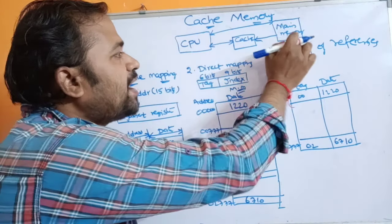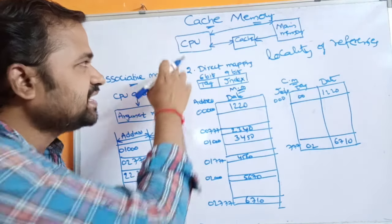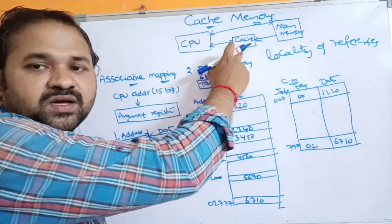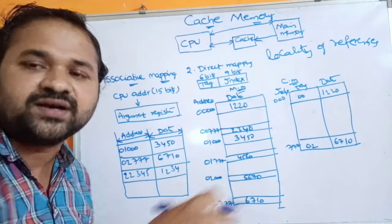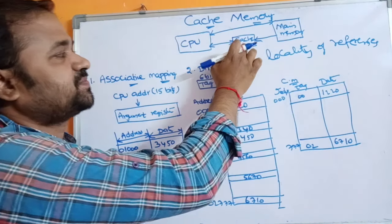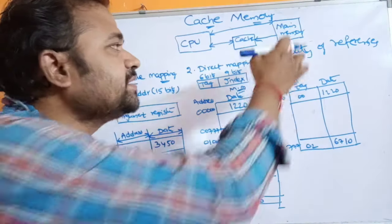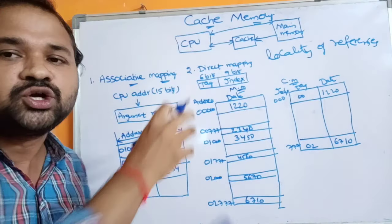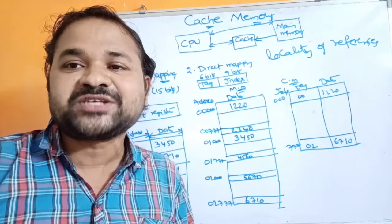That is the advantage of cache memory, and that's why we place cache memory between the CPU and main memory. Whenever the CPU needs to execute a word, it first checks whether that word is present in cache memory. If the word is present in cache, the CPU accesses and executes it. If not found in cache, the CPU accesses main memory, and that word is transferred from main memory to cache memory, then the CPU accesses cache to execute it.